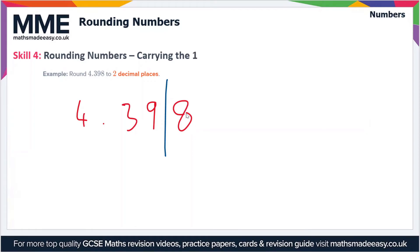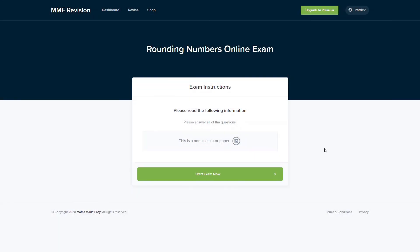But when we round this 8 up, we're going to be left with a 10 here rather than a 9. So what does that mean? Well we're going to have to add 1 to the digit in the tenths column. So we're going to be left with 4.40. So the 9 becomes a 10, but then that 1 from the 10 is carried over to the next column, so we're left with 4.40.